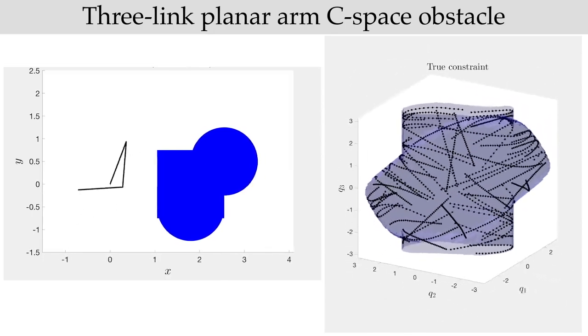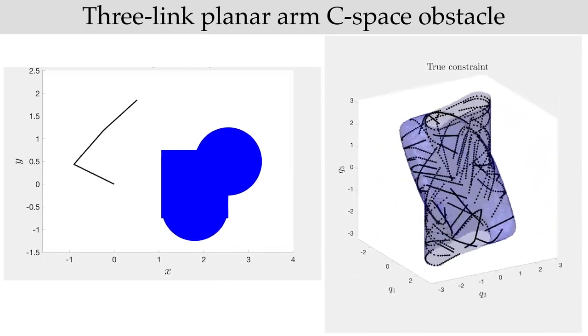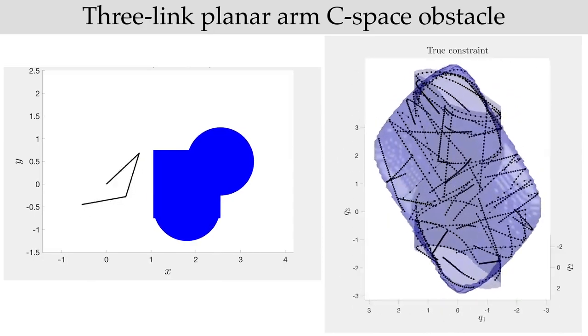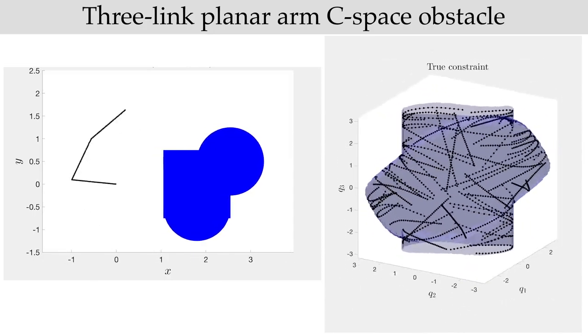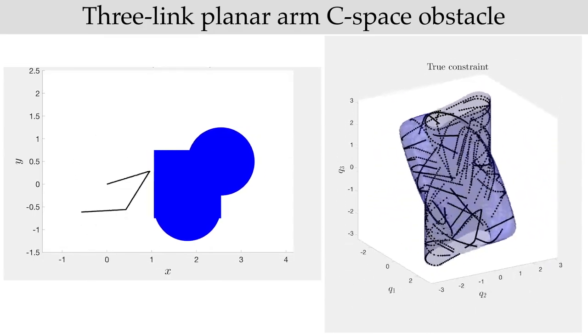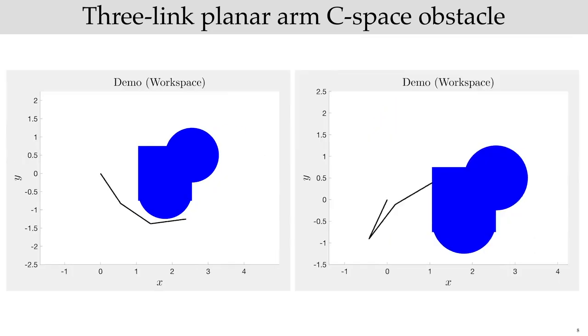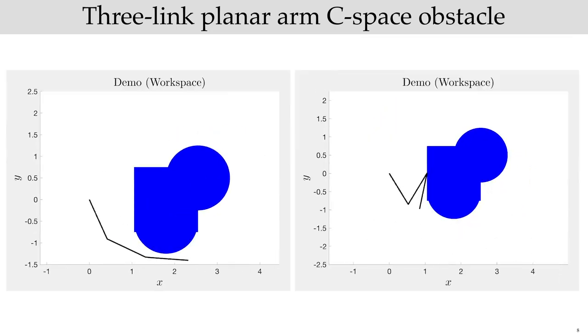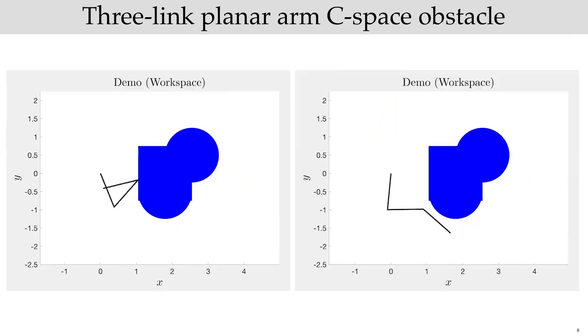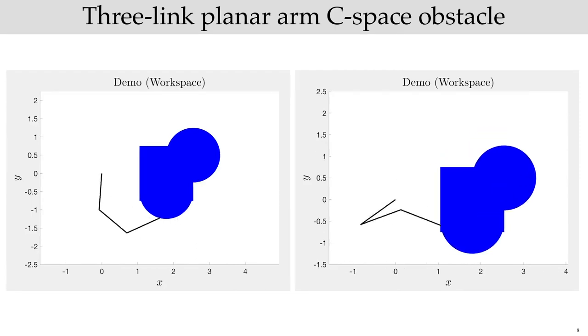Finally, we evaluate our approach on a three-link planar arm avoiding a non-convex obstacle, shown here on the left. We aim to learn the corresponding three-dimensional C-space constraint, which is also highly non-convex, shown on the right. We are given 50 demonstrations planning in this environment, and we assume no prior knowledge on the constraint structure. Here are a few of these demonstrations.